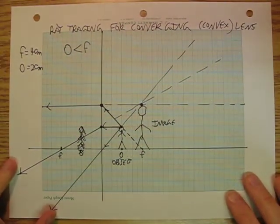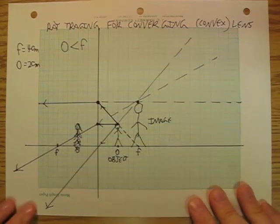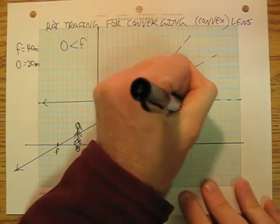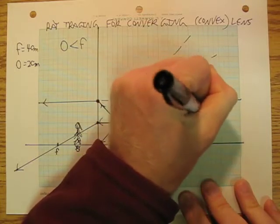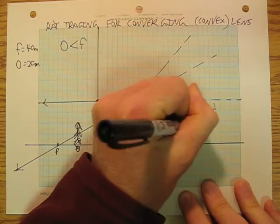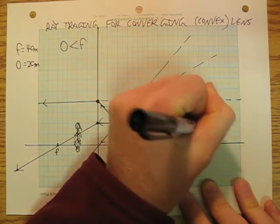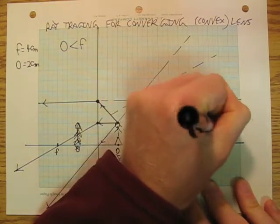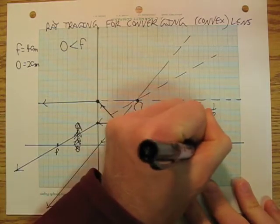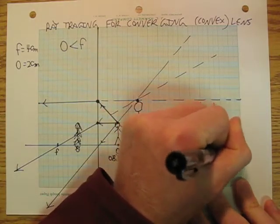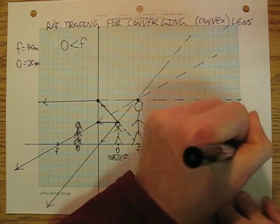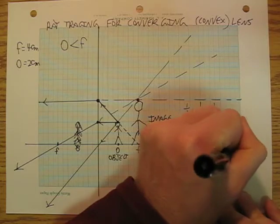As long as I got the time here, I'm going to say that 1 over I is equal to 1 over F minus 1 over O. So 1 over I is equal to 1 over 4 minus 1 over 2. And so I is going to be equal to negative 4 centimeters. So negative, that means it's virtual and upright.